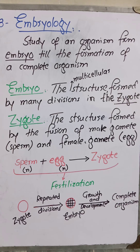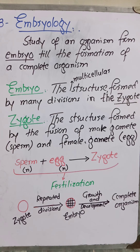After the formation of the zygote, repeated divisions occur — as you can see — and those repeated divisions in the zygote lead to the formation of the embryo, a multicellular stage. The growth and development in this embryo then leads to the formation of a complete organism. In this way, the formation of any living organism, including the human being, is accomplished.